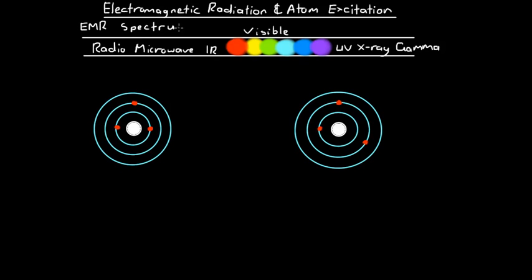So all these different types of electromagnetic radiation are, in fact, the same thing. It's just their frequency, energy, and wavelength that change — they're all the same type of wave. It's just their frequency, energy, and wavelength that make them seem a little bit different. For example, we consider light in its own category because that's what we're used to dealing with every day. However, it just so happens that radio waves are made of the same stuff as light.